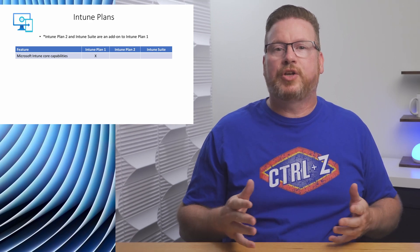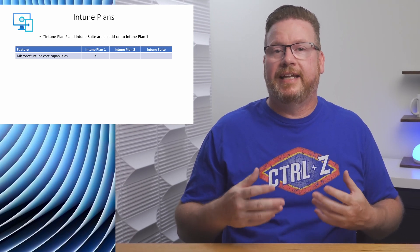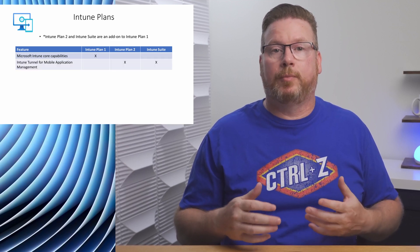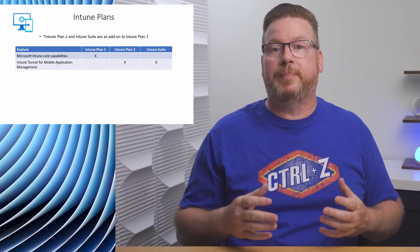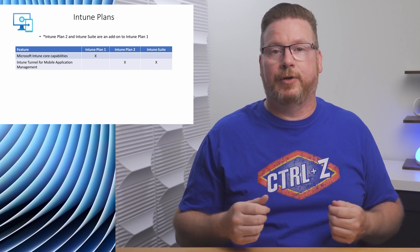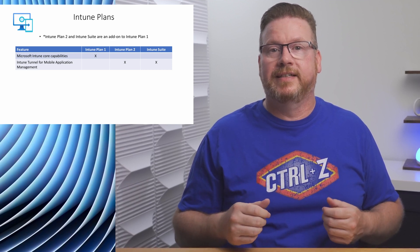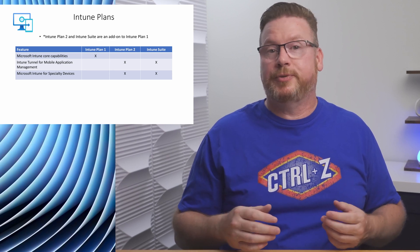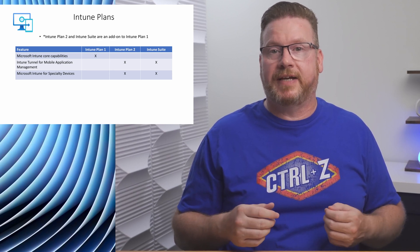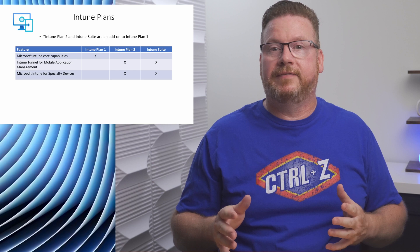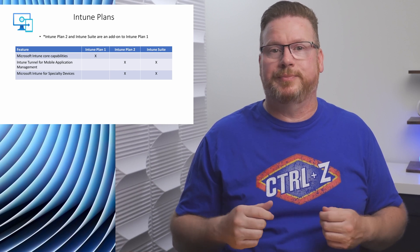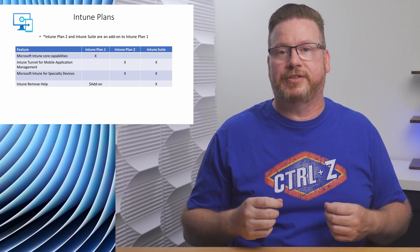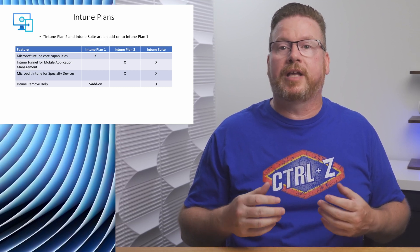Let's go over some of the other Intune features — on screen it shows which option includes each feature. Intune Tunnel for mobile applications is a lightweight VPN solution for Android and iOS devices. Intune management for specialty devices allows for configuration management and protection of special-purpose devices like augmented reality devices, smart screens, or conference rooms. Remote Help is a secure cloud-based help desk to user connection service — it's part of the Suite or can be added to Plan 1 for a fee.